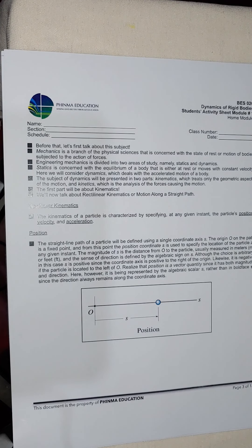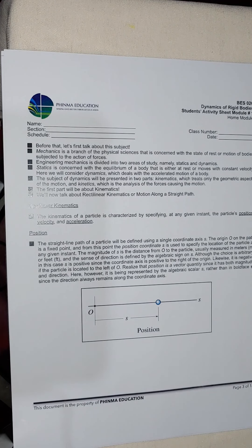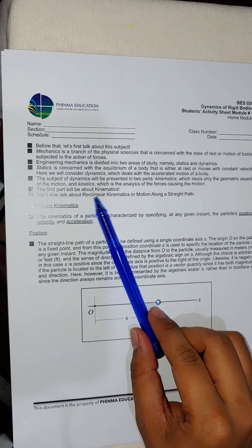In dynamics, we consider rigid bodies — particles or objects that do not undergo any deformation. In mechanics of deformable bodies, also called strength of materials, we consider objects that undergo deformation. In real life, everything undergoes deformation, no matter how small. In dynamics, we neglect deformation, which is why we call them rigid bodies.